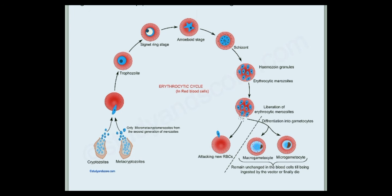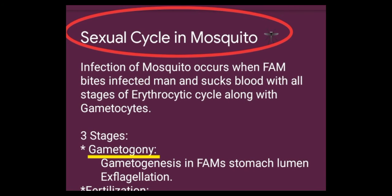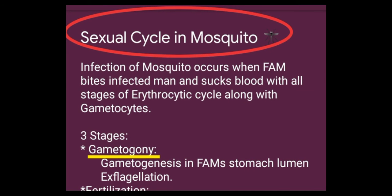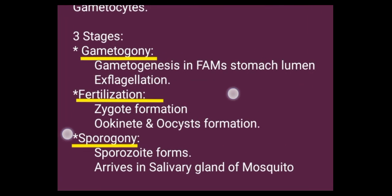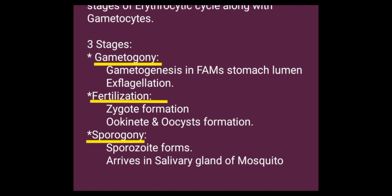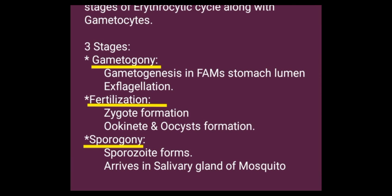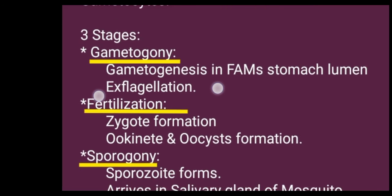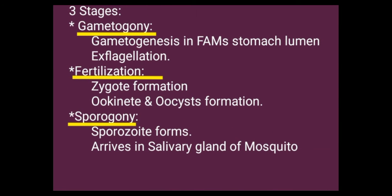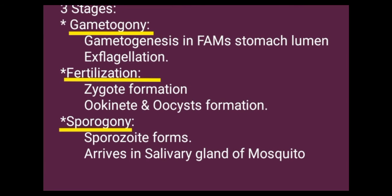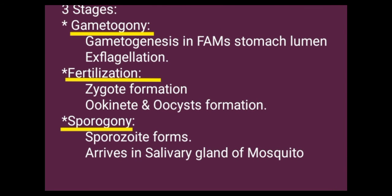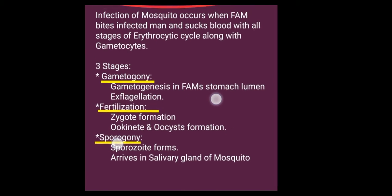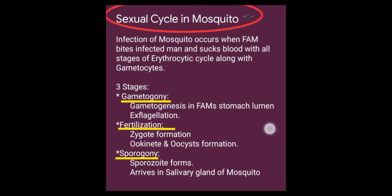In the sexual cycle in the mosquito, infection of the mosquito occurs when it bites an infected man and sucks blood with all erythrocytic stages along with gametocytes. There are three stages: gametogony, fertilization, and sporogony. In gametogony, gametogenesis occurs — male and female gametes form, with the male gamete formed by a special process called exflagellation. Then fertilization occurs, forming the zygote, ookinete, and oocyst. In sporogony, sporozoites are formed and travel to the salivary gland.